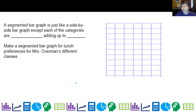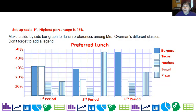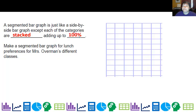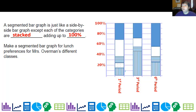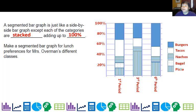A segmented bar graph is just like a side-by-side bar graph, except I'm going to take those little pieces and stack them up so they add up to 100%. So my scale goes to 100%. I'm going to do a segmented bar graph for each class period — one for first, one for third, one for sixth. On segmented bar graphs you can see they're always going to be the same height. It's really great for comparing classes and looking at different variables. Don't forget your legend and your title.